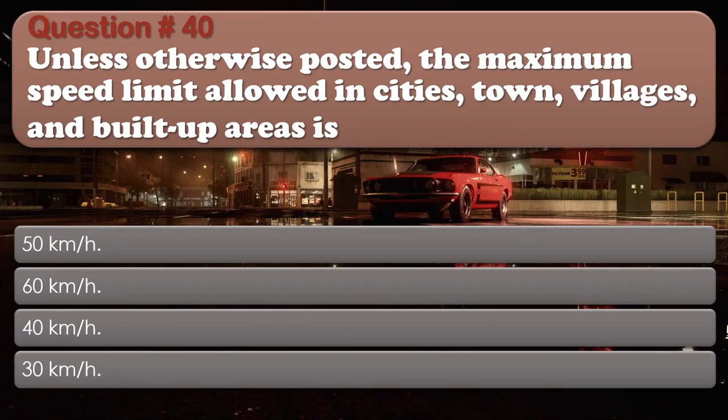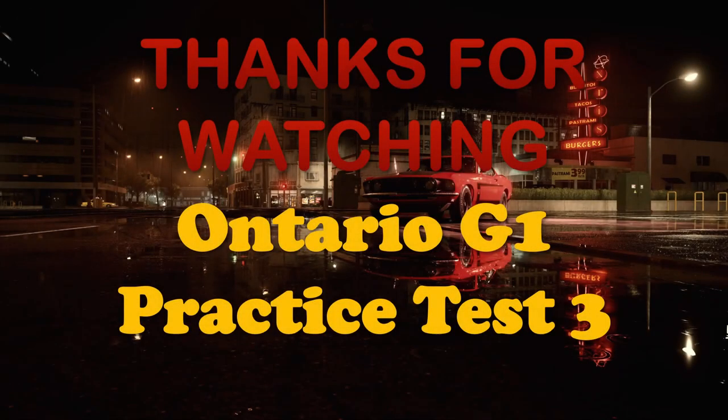Question number 40: Unless otherwise posted, the maximum speed limit allowed in cities, towns, villages, and built-up areas is: 50 km/h, 60 km/h, 40 km/h, or 30 km/h. The correct answer is 50 kilometers per hour. Thanks for watching.